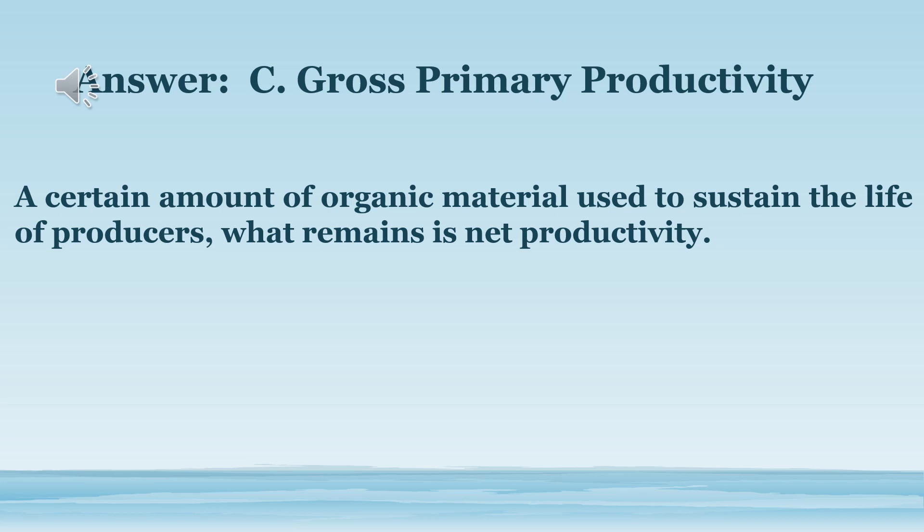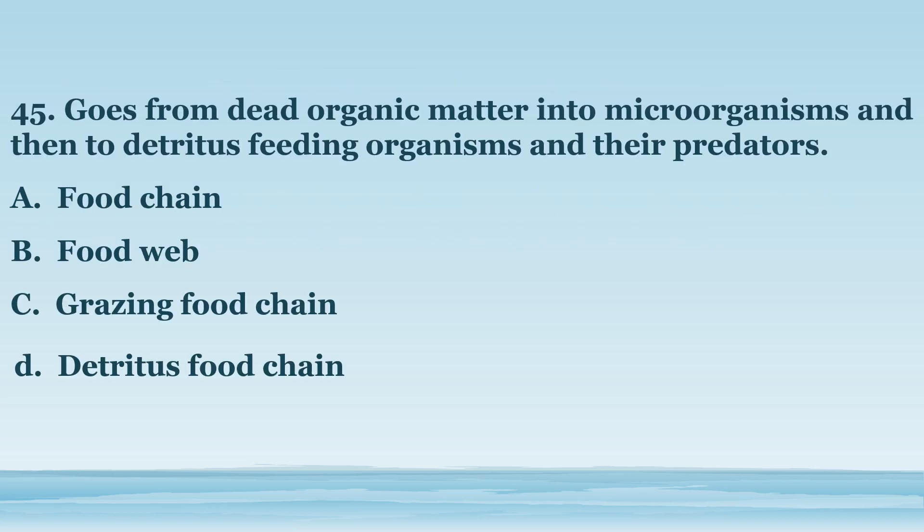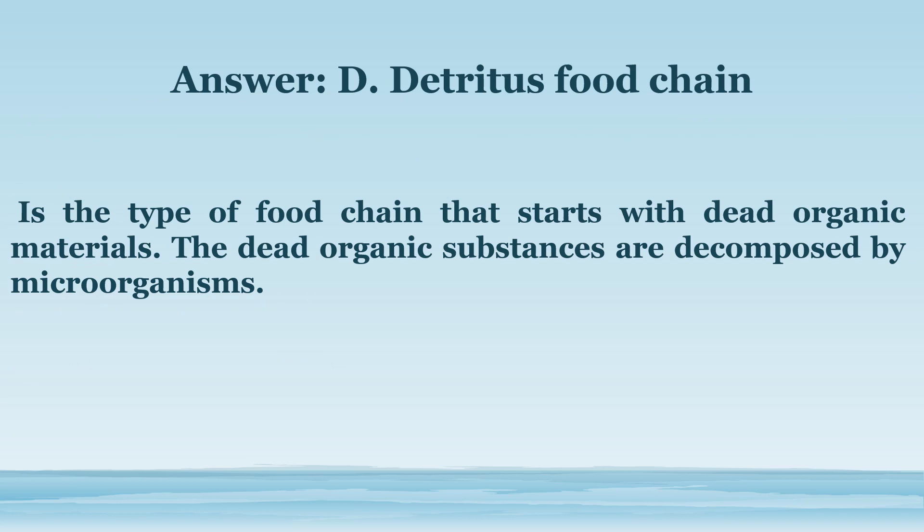Number 45. Goes from dead organic matter into microorganisms and then to detritus-feeding organisms and their predators. A. Food chain. B. Food web. C. Grazing food chain. D. Detritus food chain. The answer is letter D. Detritus food chain. The type of food chain that starts with dead organic materials. The dead organic substances are decomposed by microorganisms.